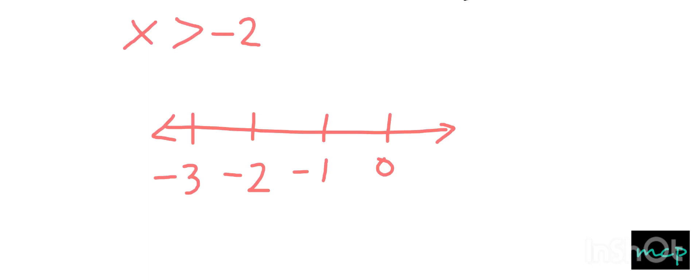So since we need to use an open circle, the reason for this is because the negative 2 is not actually included in the solutions. So let's try the graph.